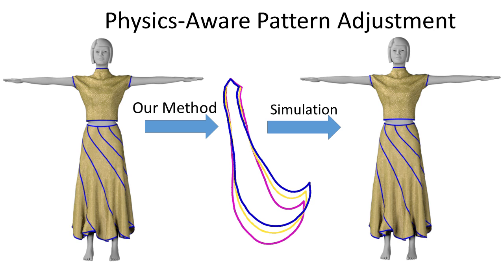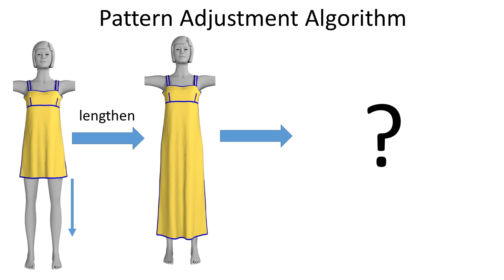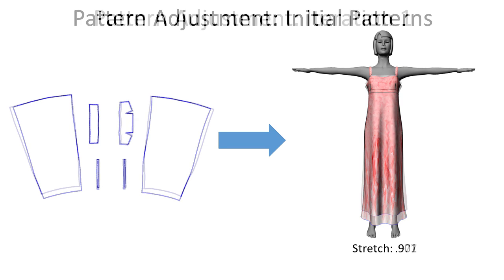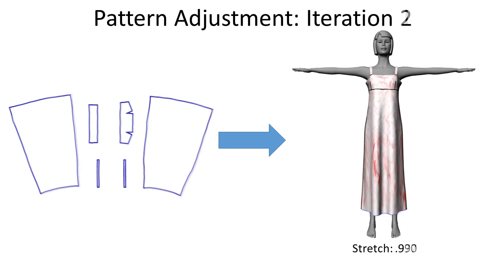To solve this problem we develop a pattern adjustment technique that produces 2D patterns that, when draped around the mannequin, recreate the desired target shape. To generate these patterns we use a fixed point optimization scheme that compensates for the deformation due to the physical forces affecting the drape.